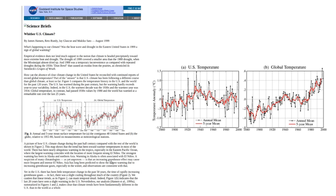But by 1999, Dr. Hansen had become discouraged that the U.S. temperature trend, according to his own data, was declining. He wanted the very high-quality U.S. temperature trend to look like the very low-quality global temperature trend.